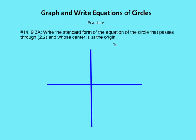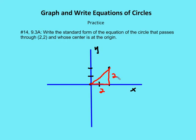In the next question, number 14, we're asked to write the standard form of the equation of a circle that passes through point (2, 2) and whose center is at the origin. Here's our center. I draw out two units to the right and two units up on the y-axis and identify the point. Now I can figure out what the radius is, because the radius is just the hypotenuse of the right triangle we create, whose legs are the x-change and the y-change. The x-change is from 0 to 2, and the y-change is also from 0 to 2.